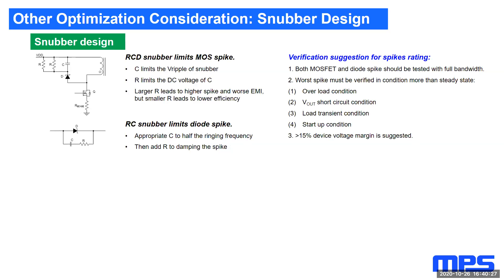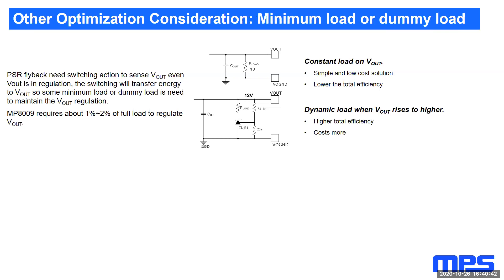In addition to the design considerations just discussed, having a good snubber design will also alleviate voltage stress on the MOSFETs and diodes. For primary side regulated flyback, having a minimum load is needed for low-cost design; otherwise the output voltage will rise and get out of control. For most PoE systems, due to the requirement for 10 milliamp maintained power signature current, a dummy load is only needed during power port debug.